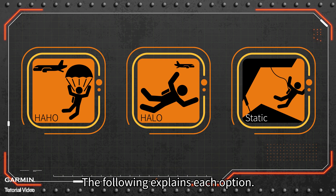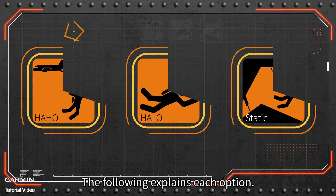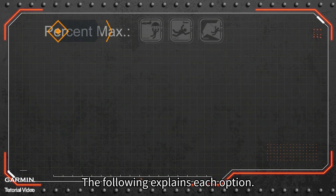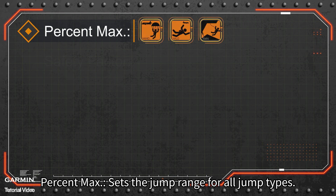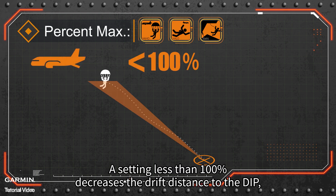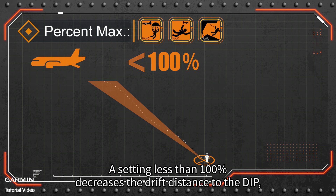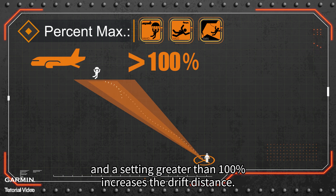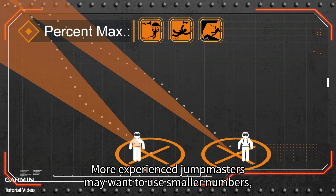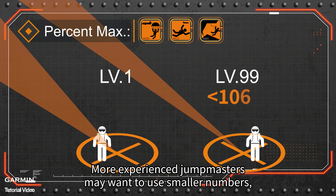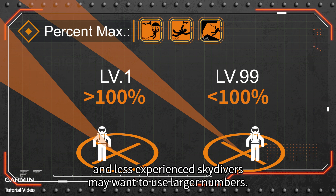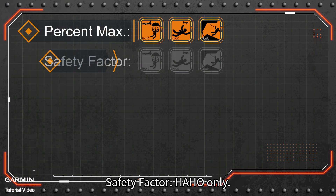The following explains each option. Percent Max sets the jump range for all jump types. A setting less than 100% increases the drift distance to the DIP, and a setting greater than 100% increases the drift distance. More experienced jump masters may want to use smaller numbers, and less experienced skydivers may want to use larger numbers.